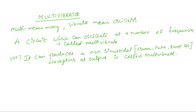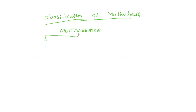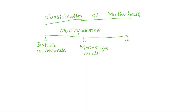Now the classification of the multivibrator — how many types are there? The multivibrator is classified into three types: bistable multivibrator, monostable multivibrator, and astable multivibrator. This is the classification of multivibrators.